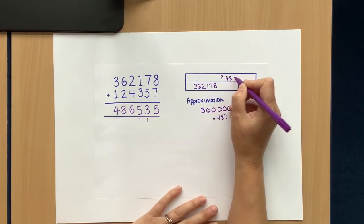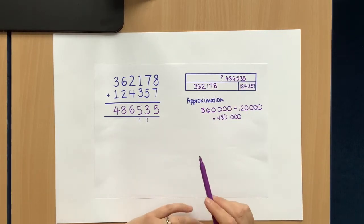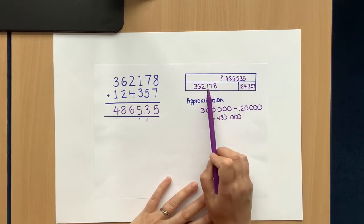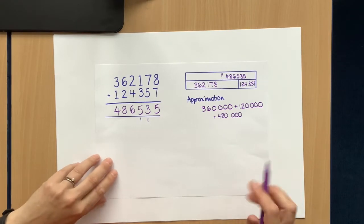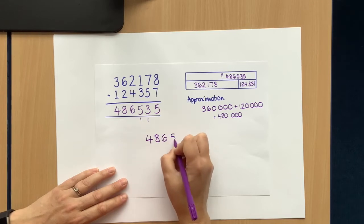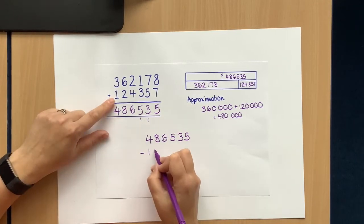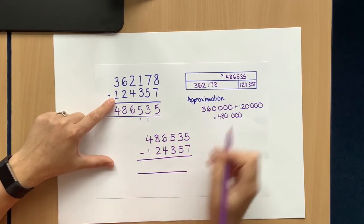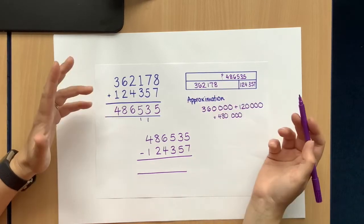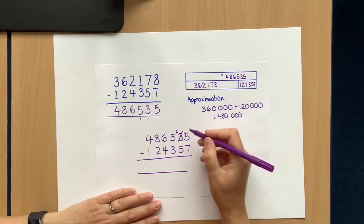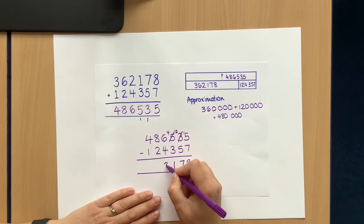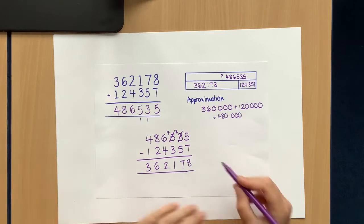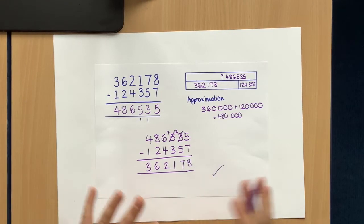If I was now to write this into my bar model up here, we now need to think about how we use the inverse to work out. So what we should be able to do now is take this bigger number, take away this one and end up with this one. The inverse of addition is subtraction. So I'm just going to do that now and check that I end up with the right answer. I'm going to take away 124,357. I'm taking away this, I should get that as my answer. If I do, I've probably got it right. You can check my working as I go. You know I'm prone to a few mistakes here and there. 362,178. Yeah, it matches, so that's correct. So there's a few ways you might check the accuracy of your answers.